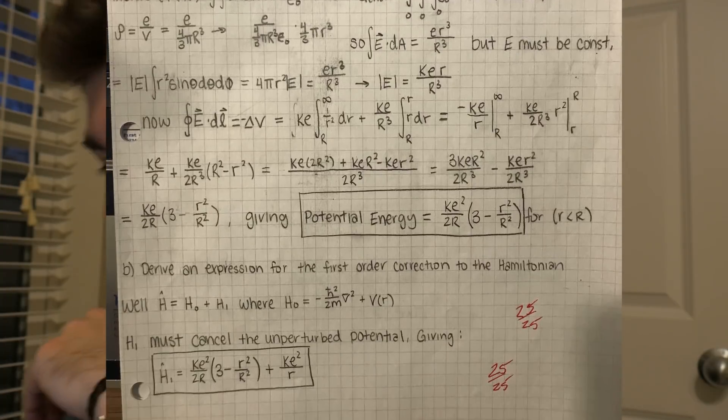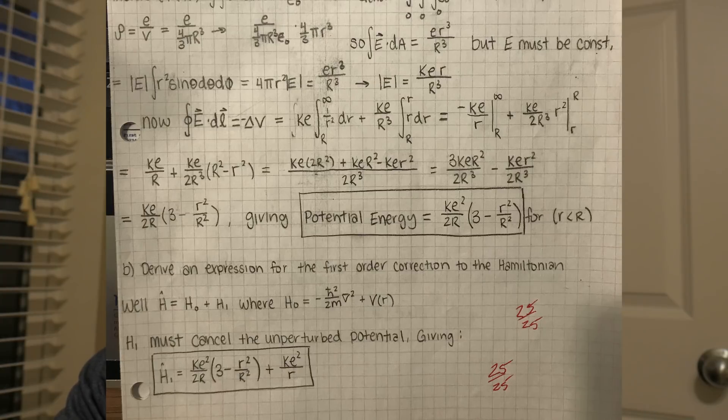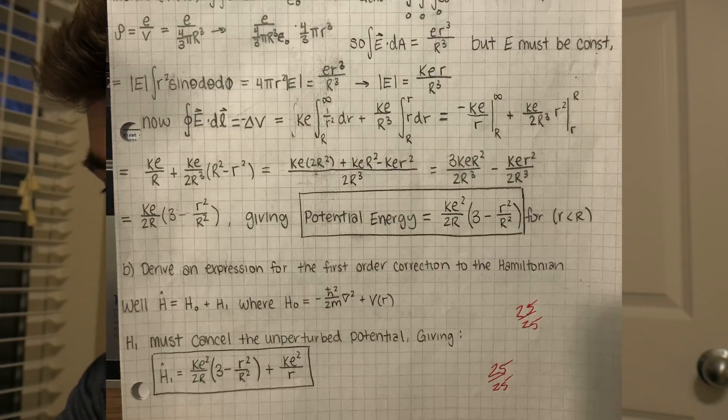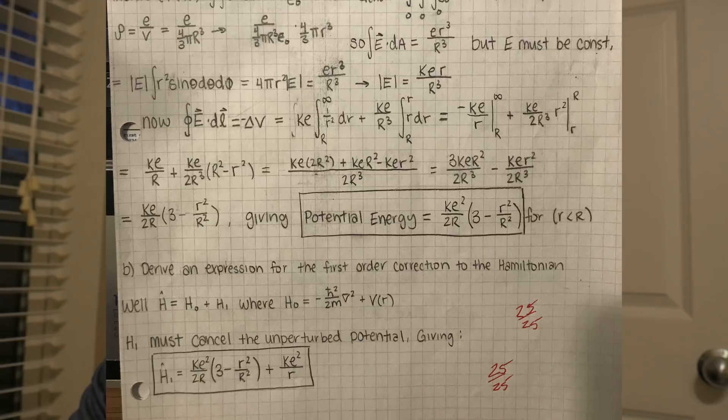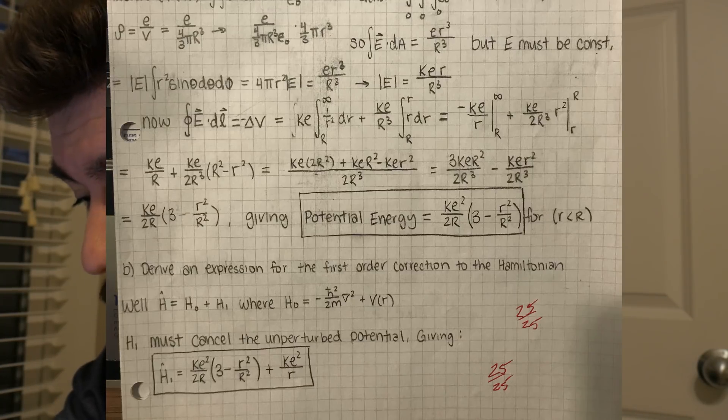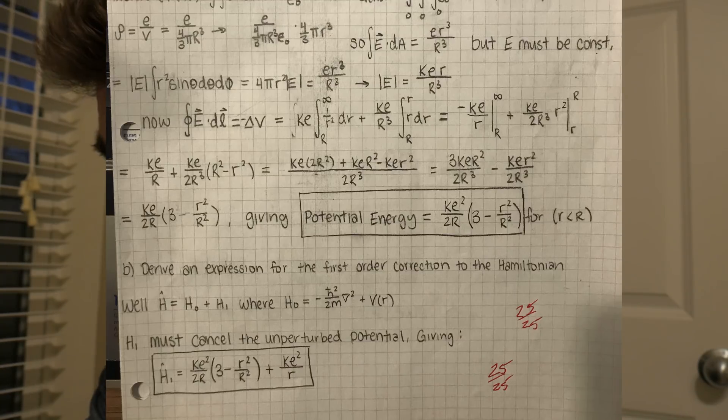B is actually even easier because B tells you to obtain an expression for the perturbing Hamiltonian. Well, we already did most of the work here. All that's going to happen is that we're going to use that potential energy due to the finite sized proton, and we have to add the Coulomb potential in order to counteract the non-perturbing potential of the normal Coulomb potential. So we take our, so as you can see here, all that we have is that potential energy plus that correcting term that cancels out the minus k e squared over r. That would be an h zero.